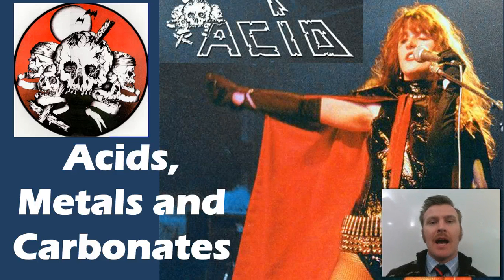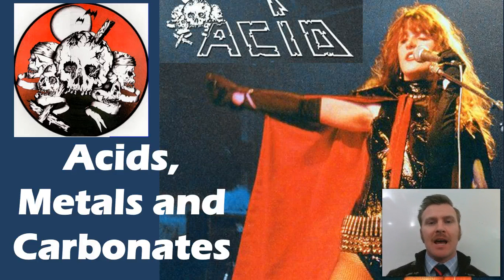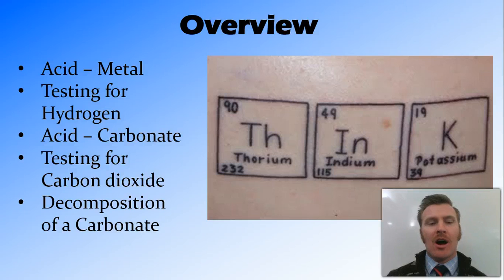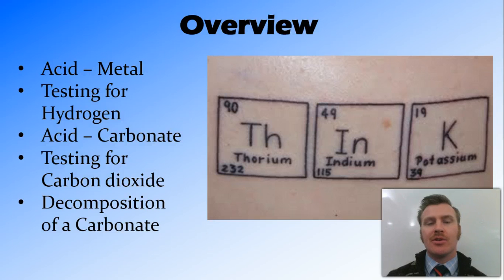In this video, we're going to look at the reactions between acids, metals, and carbonates. We're firstly going to look at the acid-metal reaction, and then testing for hydrogen, the acid-carbonate reaction, and testing for the carbon dioxide produced, as well as the decomposition of a carbonate.